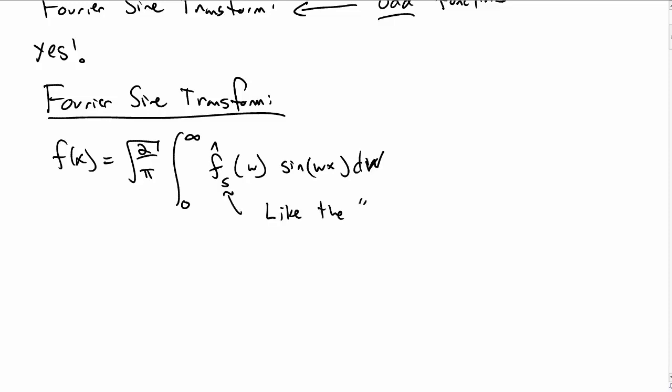And that f hat s of w is like the b sub n in your Fourier series, your usual sine version of the Fourier series. Notice also there's a subscript, subscript of s for sine, and a subscript c for cosine.